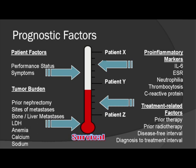There are tumor burden factors such as prior nephrectomy, sites of metastases, bone metastases — which are sometimes refractory to some of our treatments — liver metastases, LDH, anemia, calcium, and sodium. There are also pro-inflammatory markers: IL-6, ESR, neutrophilia, thrombocytosis, and C-reactive protein, which are particularly prominent in Asian prognostic factor models. Treatment-related factors include prior therapy, radiation, and disease-free interval, since a long disease-free interval suggests more indolent disease.